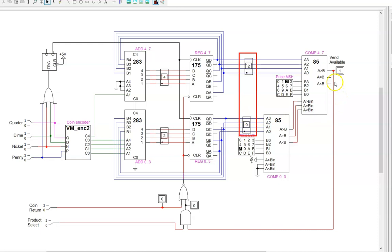For the first time, Vend Available is activated. I can pick a soda, and the register drops down to 0 cents. What happened to the extra 1 cent I paid? It is gone. Remember that we don't have the ability to remember change in this design.